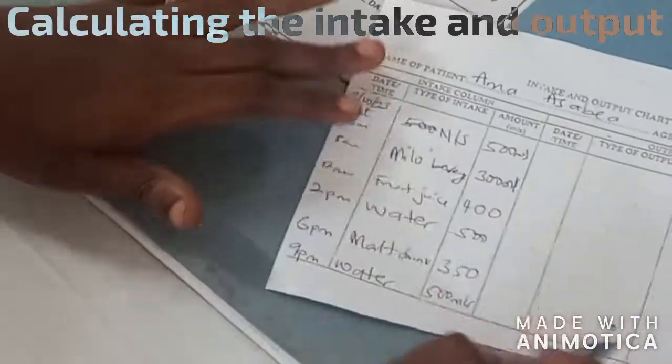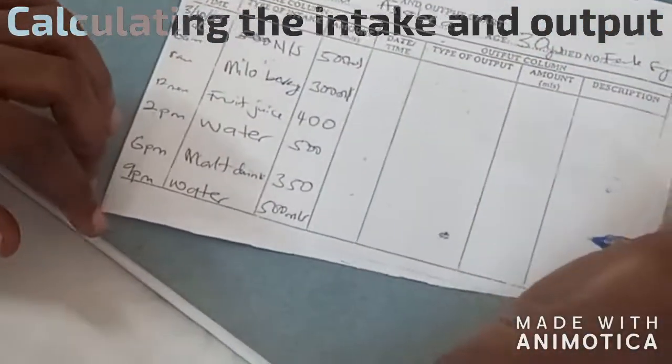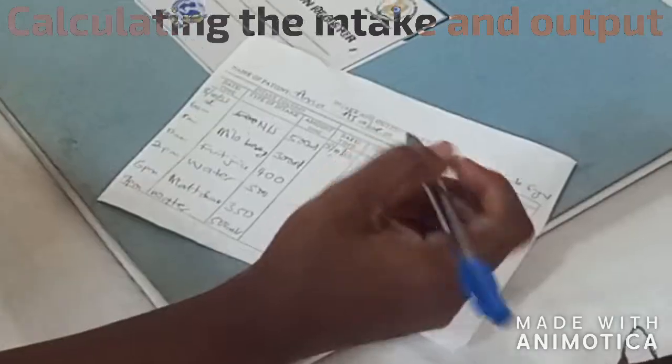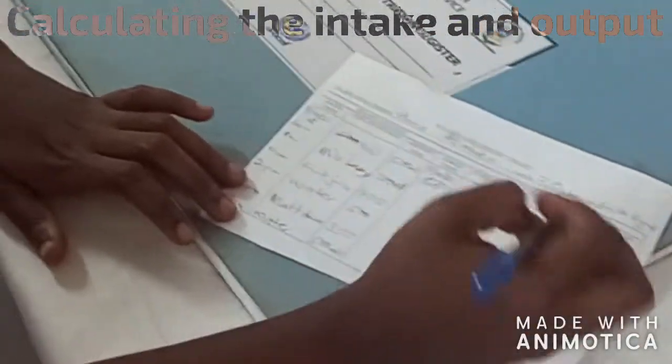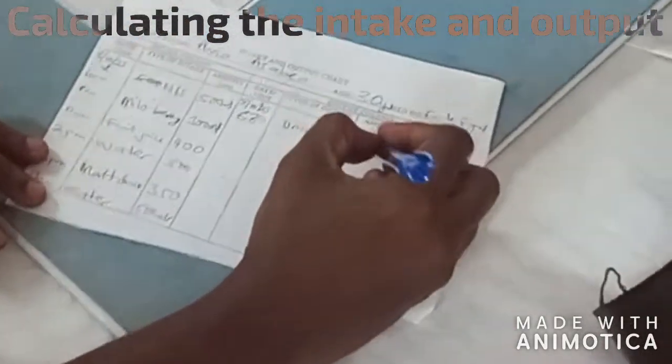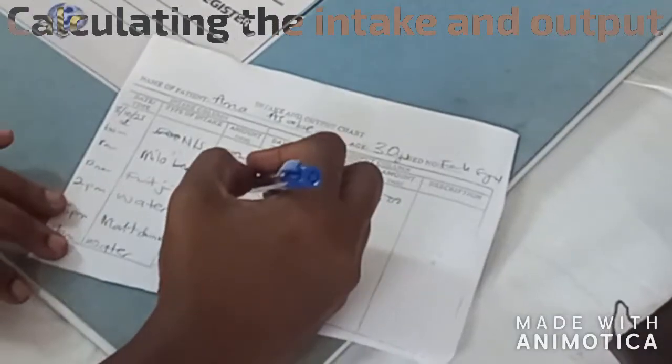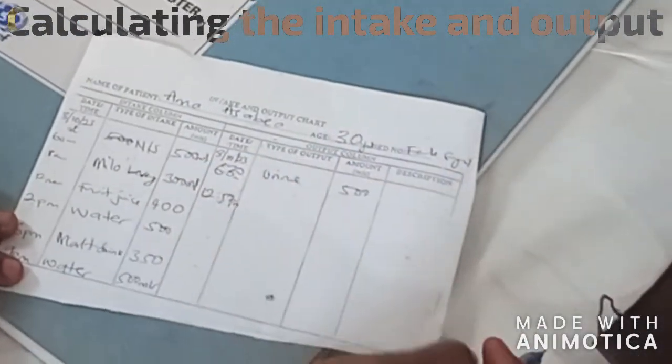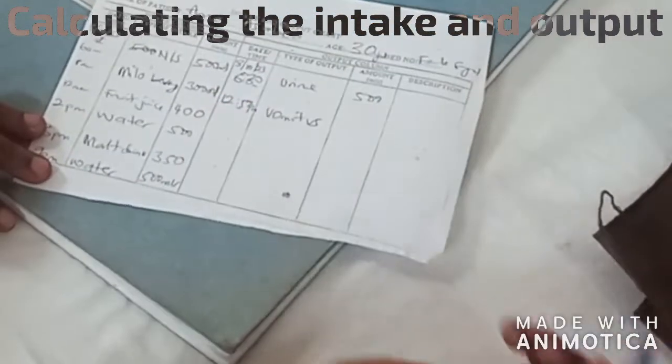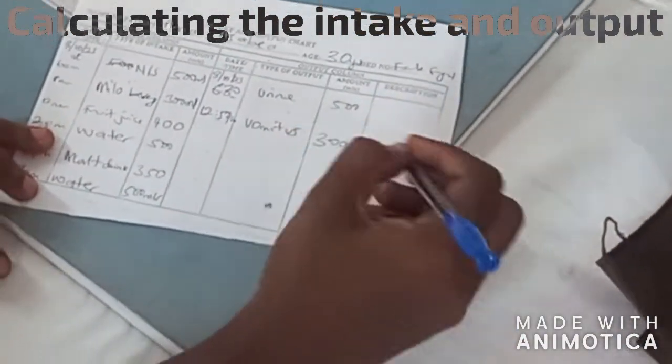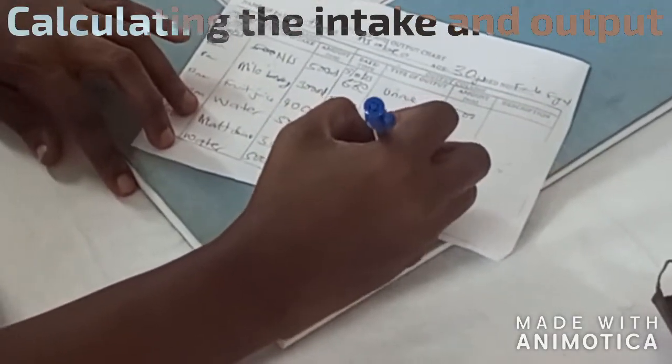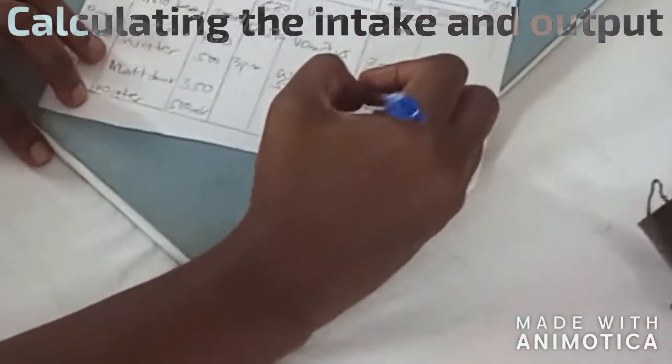Then outputs during the day, 3rd October 2023. At 6:30am patient passed urine 500 mls. At 12:50pm patient vomited 300 mls. At 3pm patient had diarrhea, watery stools, 400 mls.